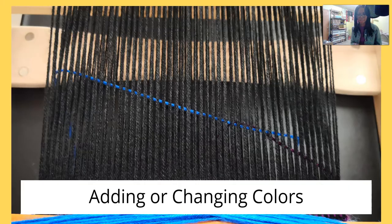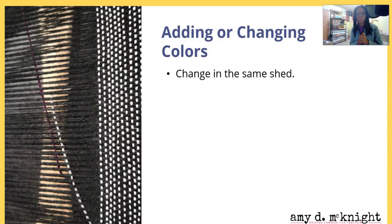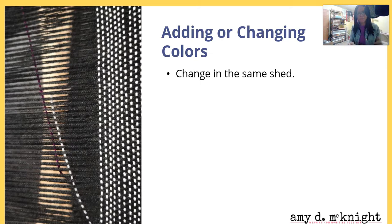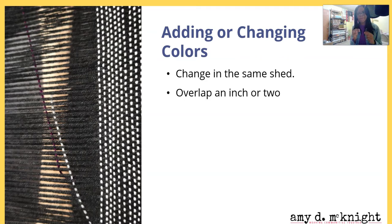Now we're going to look at adding or changing colors. What you want to do is change it in the same shed — that is, if you're finishing up a color or want to change colors, you're going to put the shed in, whatever direction, up or down. Run that color through, pull it to the back, and then run the next color through before you change the shed. You're going to overlap that by an inch or two in the shed, with those ends poking to the back.